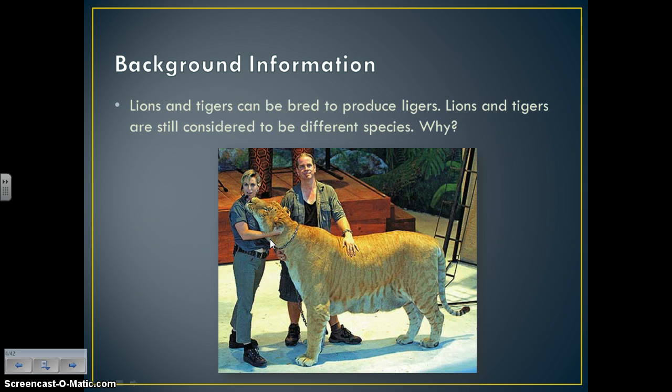You've all heard of ligers or tigons. Lions and tigers can be bred to produce ligers, but lions and tigers are still considered to be different species. Why? Even though ligers can produce more ligers, lions and tigers would never reproduce in their natural setting because they live on entirely different continents, so we consider them different species.